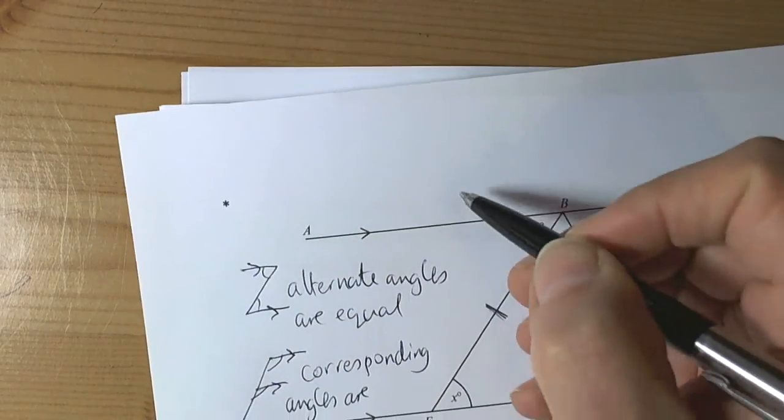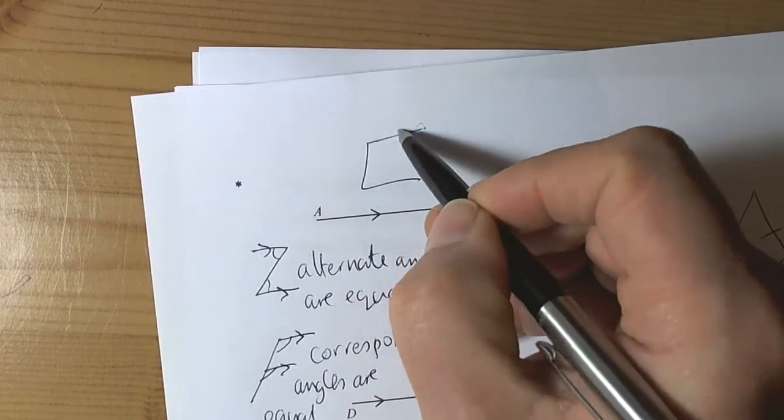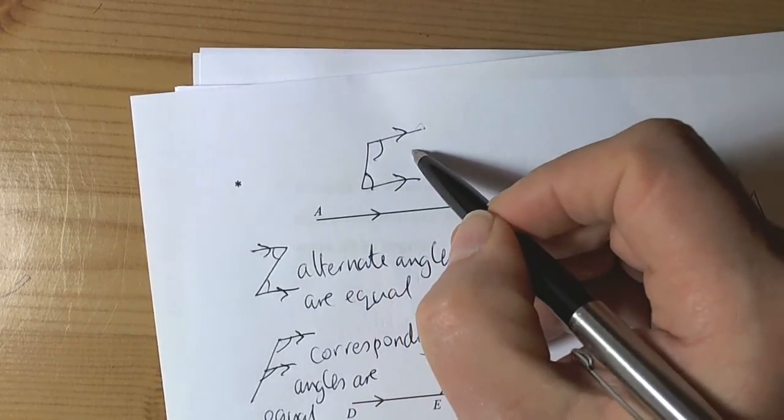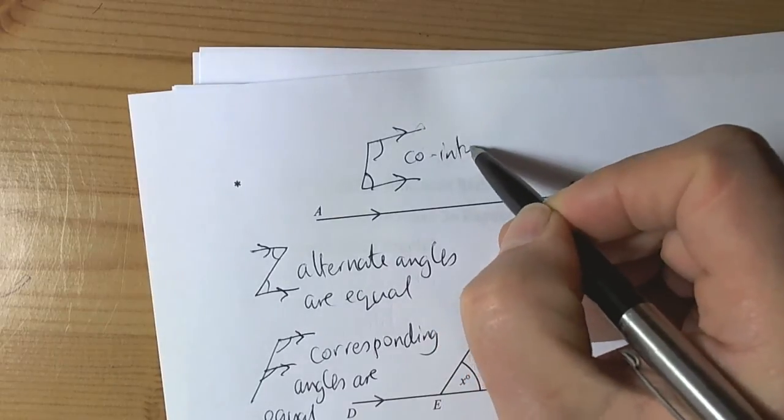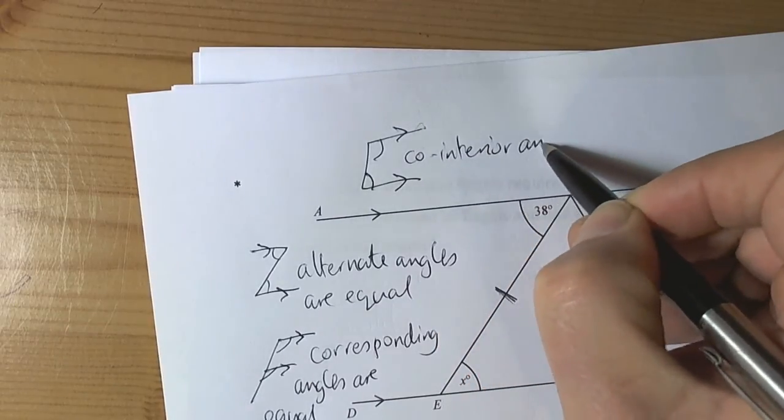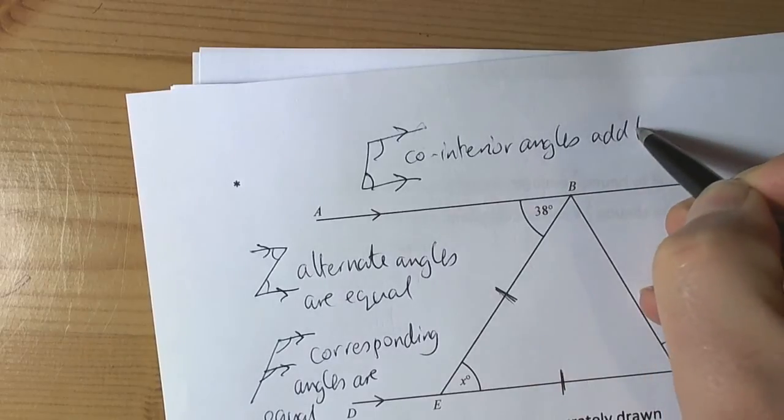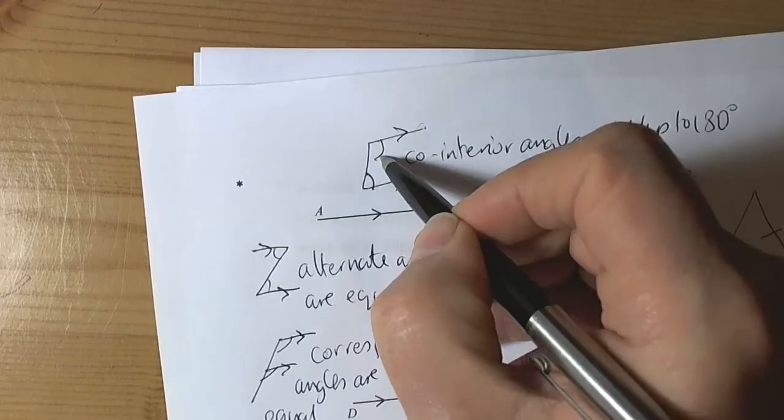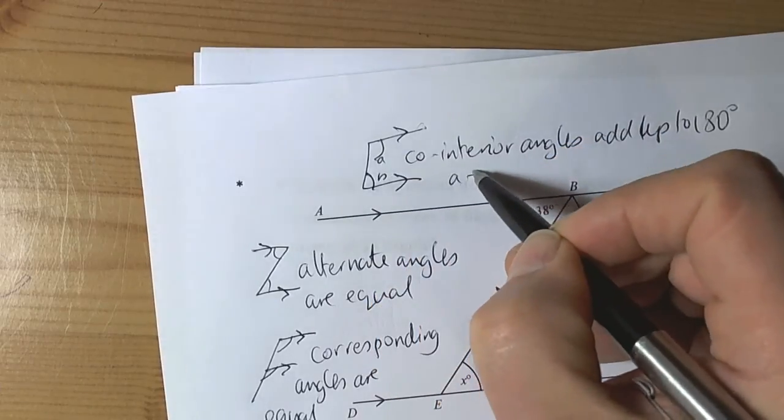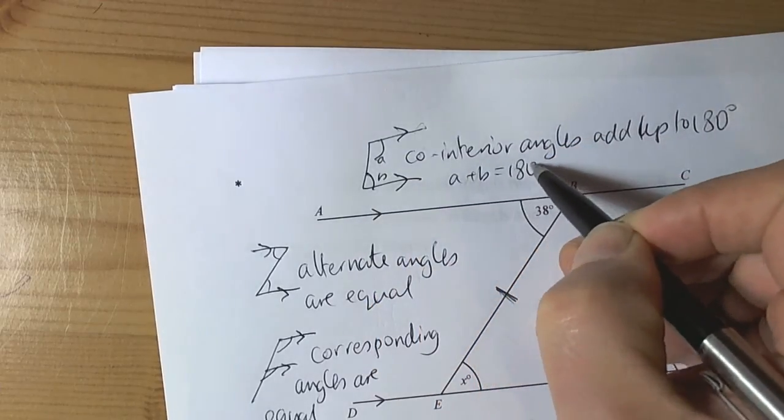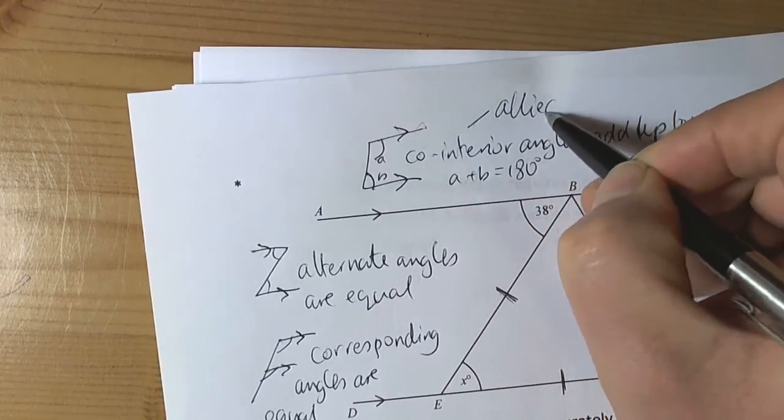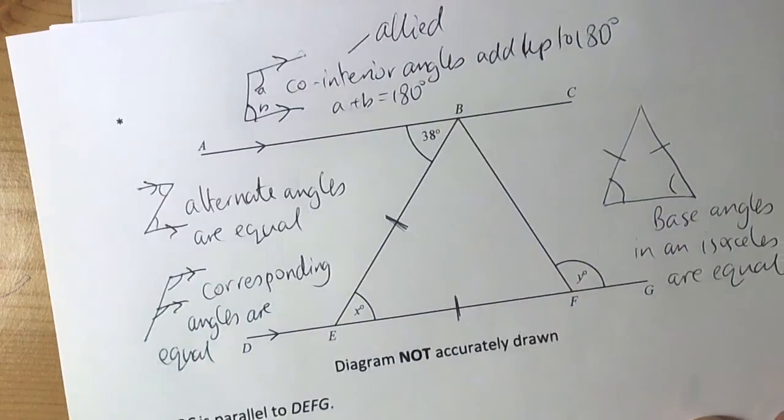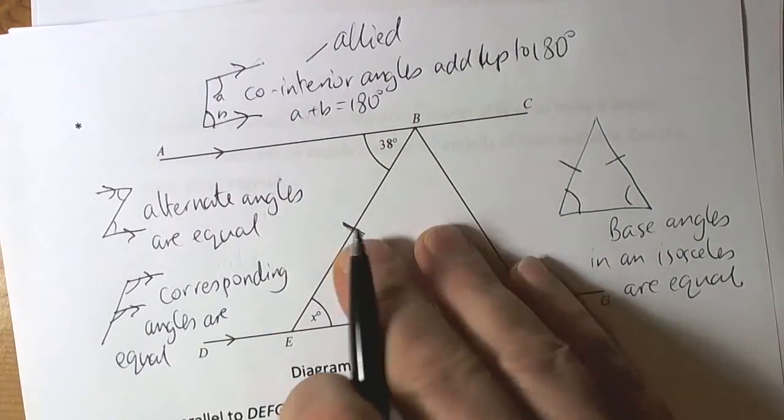If we see a C picture where the parallel lines trapped two angles inside, then we say that co-interior angles add up to 180 degrees. These two angles A and B add up to 180 degrees. Sometimes you'll see in books that these are called allied angles. So those are the theories that we can see before we even read the question.